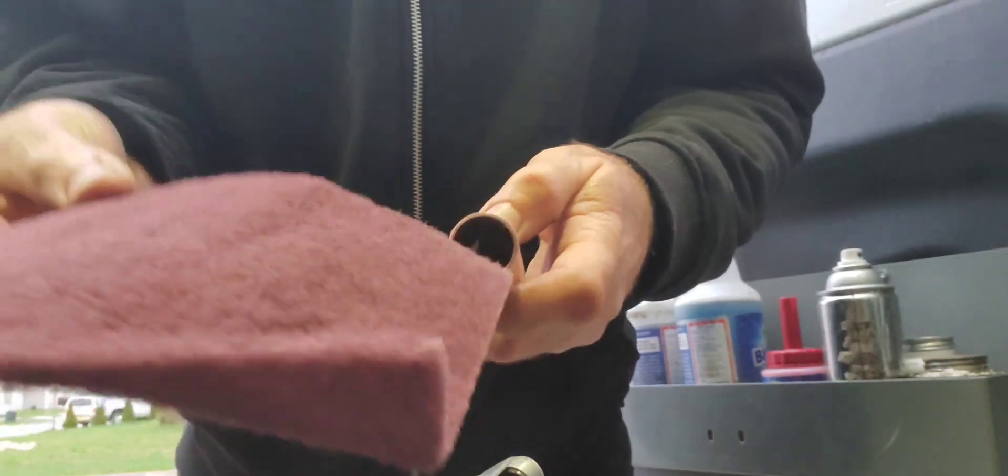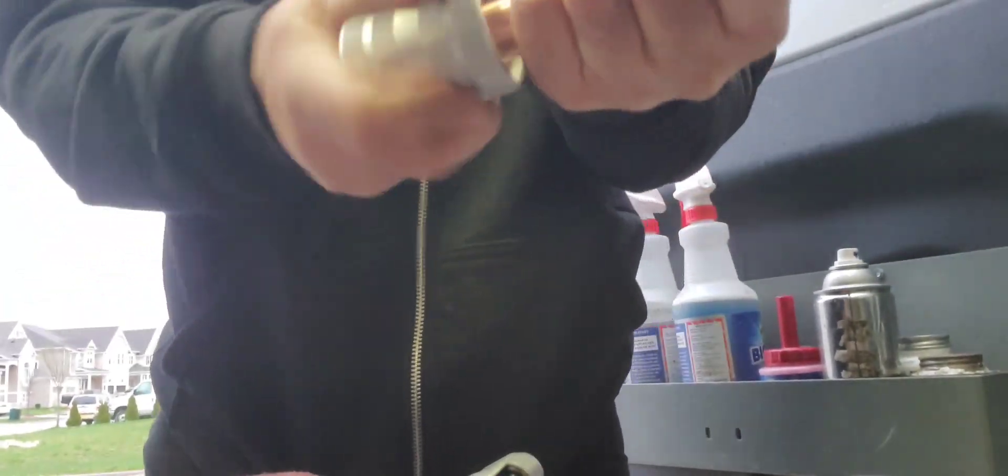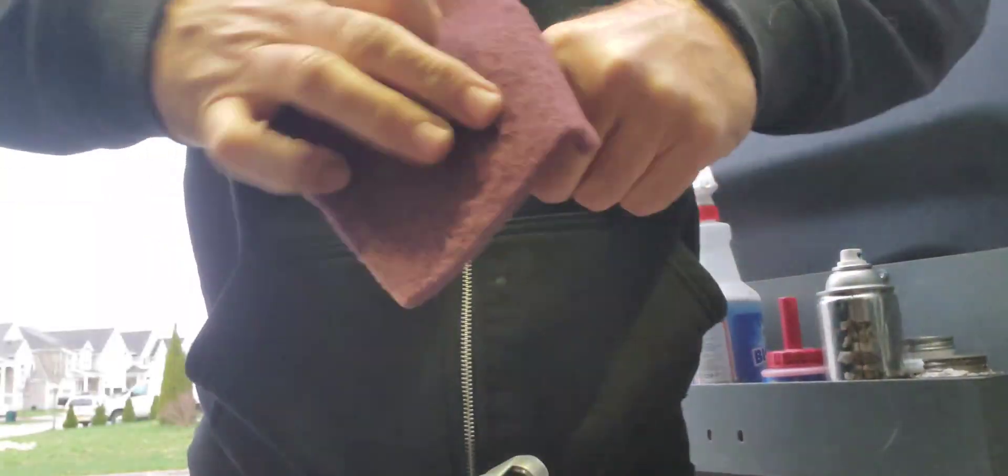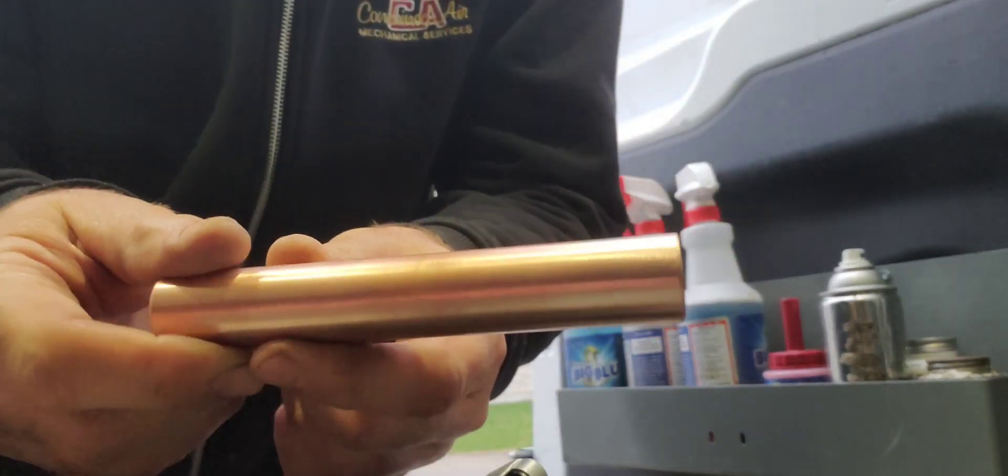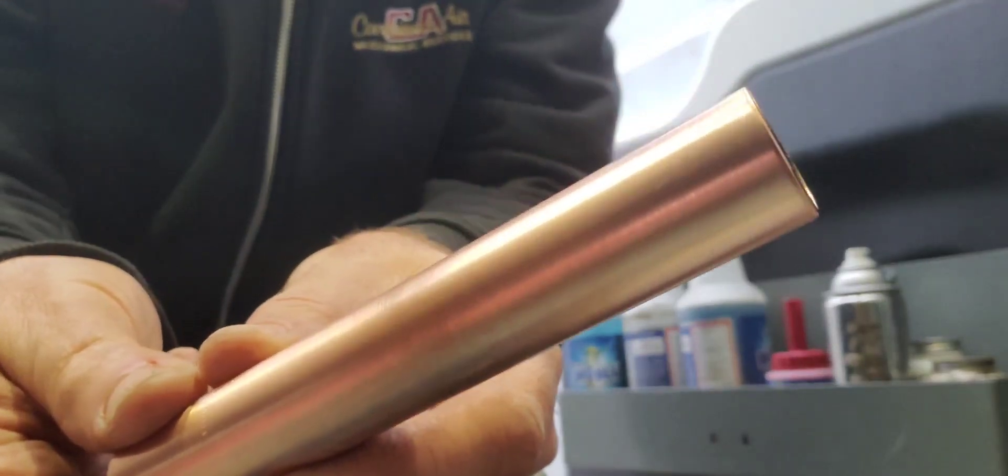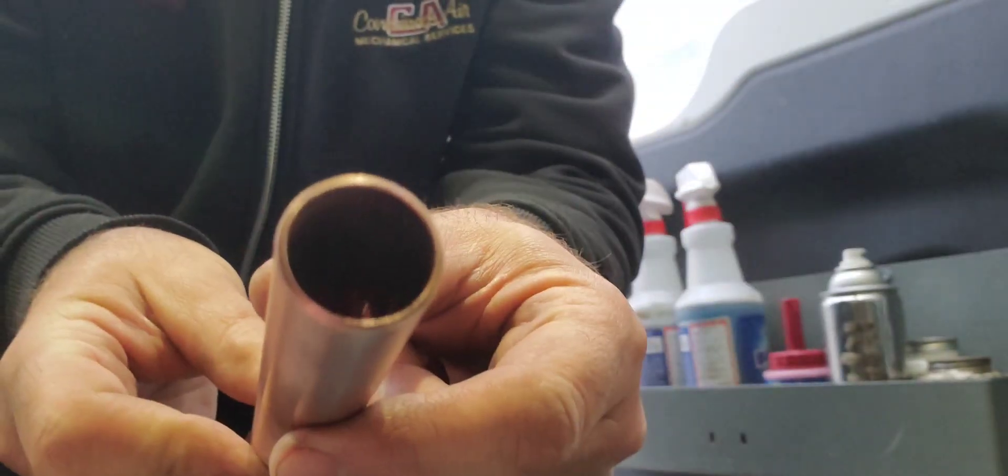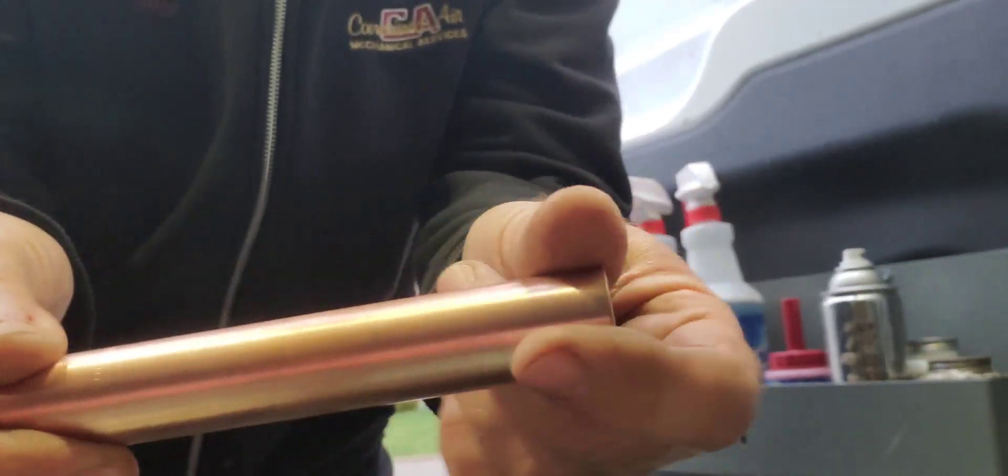Then we're going to go again with the Scotch-Brite pad and make sure it's nice and clean. That's what our pipe should look like right there: super clean, no burrs, very clean and polished.